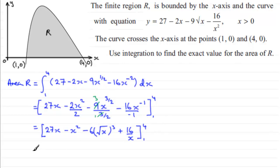So we just need to substitute our values in, starting with 4, the top limit. We'll put this in square brackets. We've got 27 multiplied by 4, and then minus 4 squared, and here we've got minus 6 times effectively the square root of 4 and then all of that cubed, and then plus 16 divided by 4.